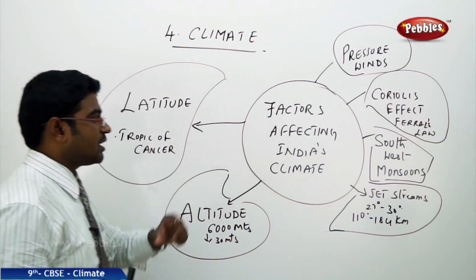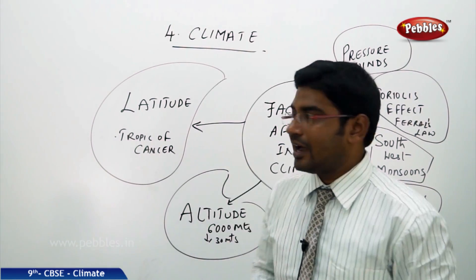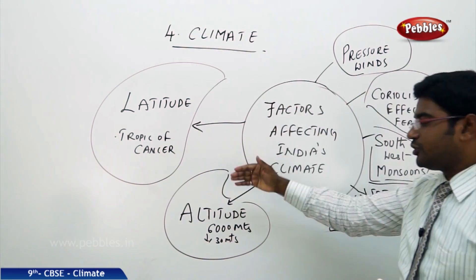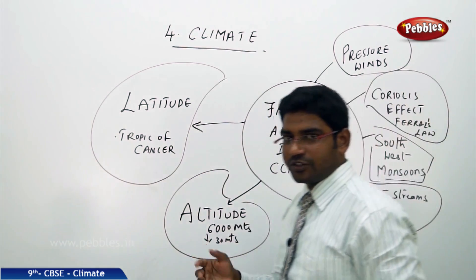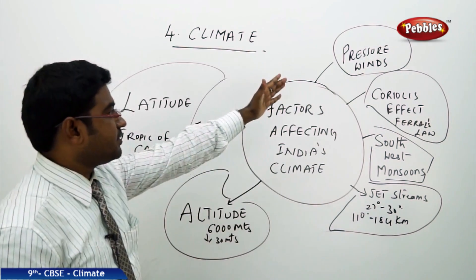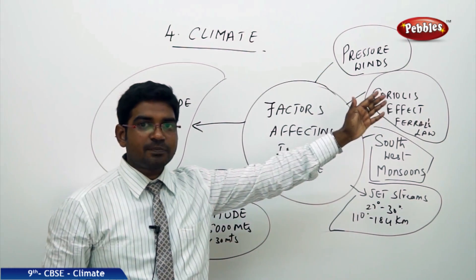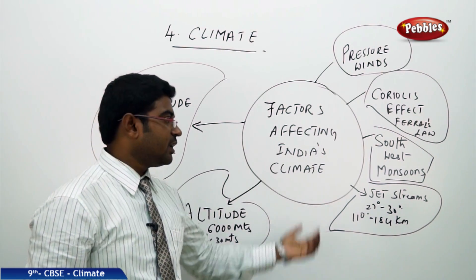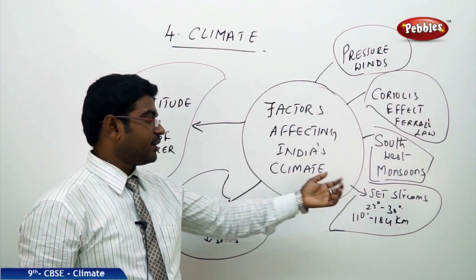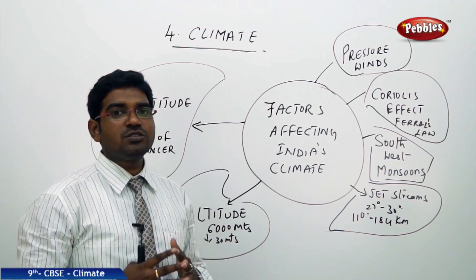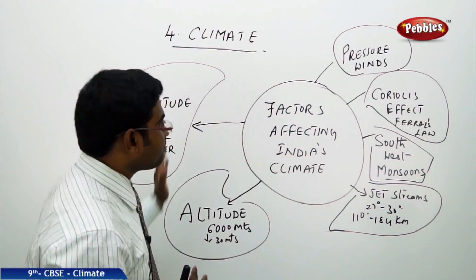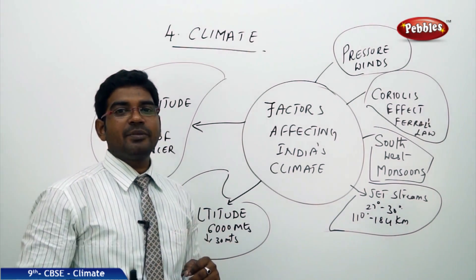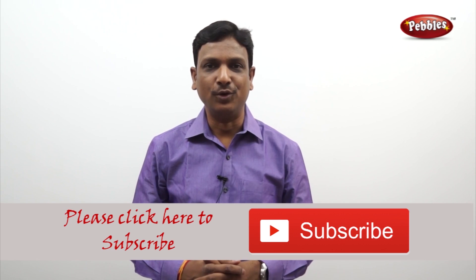The main factors affecting the climate of India are: the latitudes, particularly the Tropic of Cancer; the altitudes, including the Himalayas and coastal regions; the pressure winds; the Coriolis effect and Ferrell's law; the southwest monsoons; and finally the jet streams, which come with very high speed. These are all the important factors which influence India's climatic conditions.